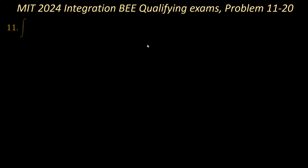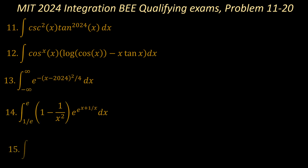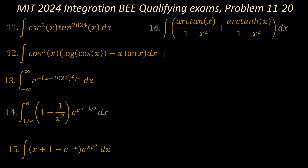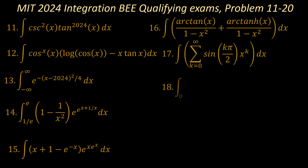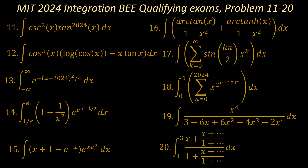Problem 11 is shown here, problem 12 follows next, problem 13, problem 14, problem 15, problem 16, problem 17, problem 18, problem 19, and problem 20. So on to problem 11: the indefinite integral of cosecant squared of x times tangent to the power 2024 of x.